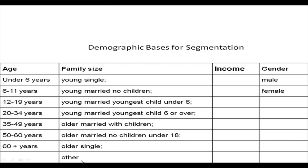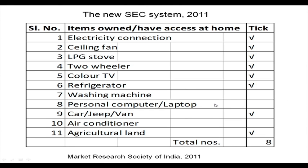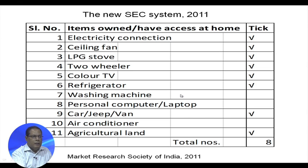Income distribution could range from 10,000 to 20,000 rupees a month, 20,000 to 50,000, 50,000 to 1 lakh, 1 lakh to 3 lakhs, 3 lakhs to 5 lakhs, and so on — creating income groups. There are also groups based on gender: male, female, and others.